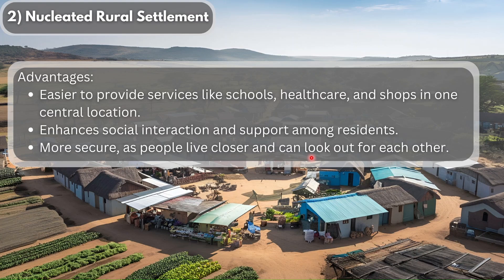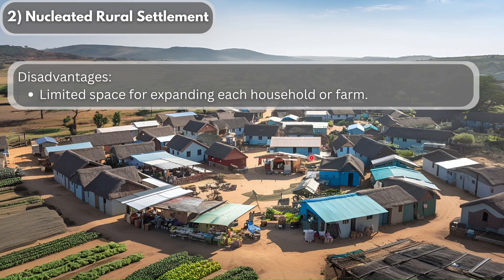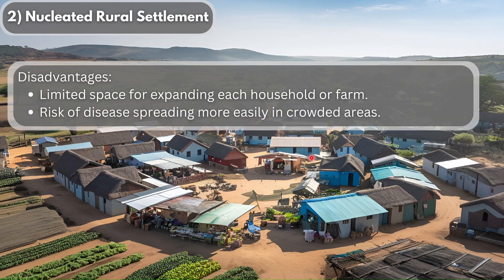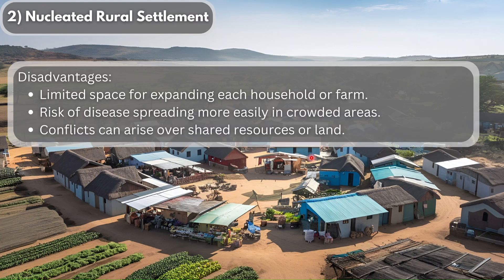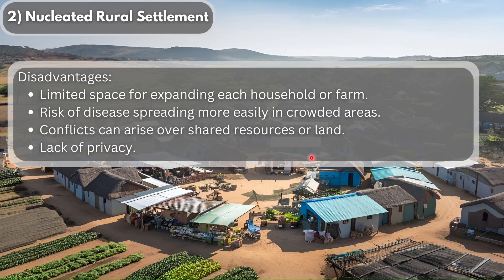The disadvantages of nucleated rural settlements include: limited space for expanding each household or farm because settlements are so close together. There is a risk of disease spreading more easily in crowded areas — diseases like TB will be very easily spread. Conflicts can arise over shared resources or land. Another major disadvantage is the lack of privacy, as people are located so close to each other.